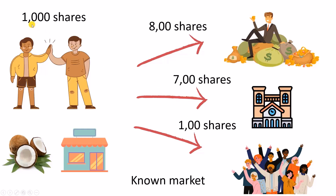Now, these two groups have only 1000 shares to offer, but we have 800 plus 700 plus 100 — that is 1600. So there is a demand for 1600 shares where there is a supply of only 1000 shares at the IPO. So when the demand is more than the offering, the IPO is said to be oversubscribed.